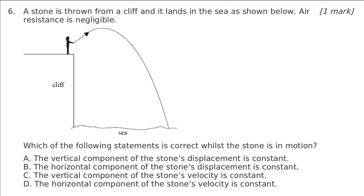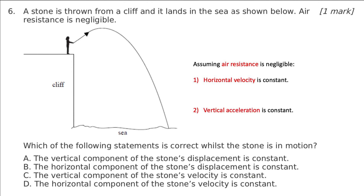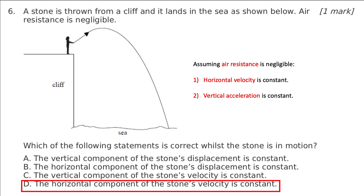A stone is thrown from a cliff and lands on the sea, as shown — we've got this asymmetric path again. We want to think about some statements. The vertical component of displacement is not constant because we're moving down and up. The horizontal component of displacement is not constant because we're moving from left to right. The vertical component of velocity is not constant because we have acceleration in the Y direction. D is the only one left — assuming no air resistance, we have zero acceleration in the X direction and therefore constant horizontal velocity.